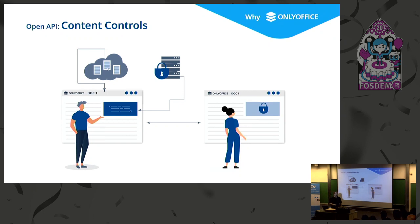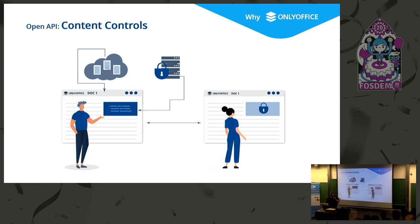Next, content controls — one of the most important plugins; about three out of ten developers use it. For example, let's say you work on a document stored in your cloud or server. The document has an area called a content control that takes data from another storage — from your private database or some other source. Importantly, you might not even have access to remove or edit that content control, and you can share the document with anyone who won't be able to see the content of that area.